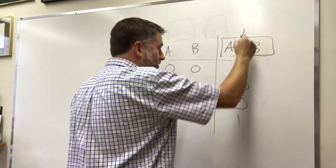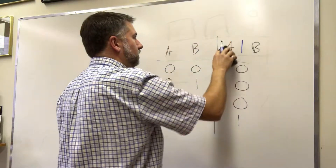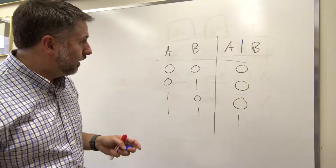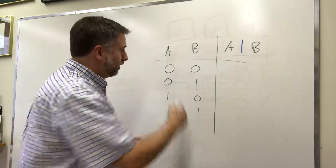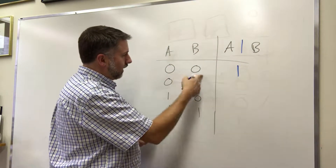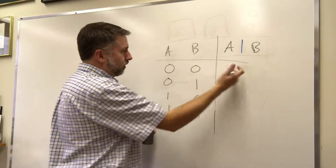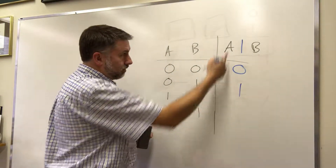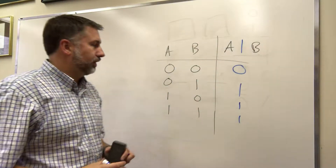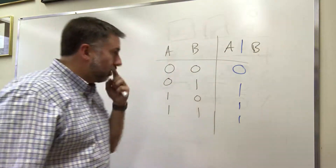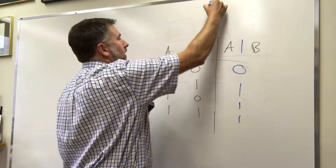OR is another arrangement. A OR B — that vertical bar means OR. A OR B is going to be 1 when any of the inputs is 1. When none of the inputs are 1, A and B are both 0, the output is 0. In this case the output is 1. A OR B together is 1 if either or both inputs are 1. So this is OR — another possible operation we can do on boolean variables. So we've got AND and we've got OR.